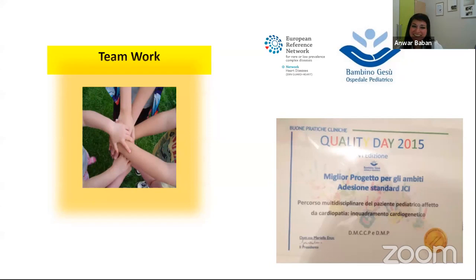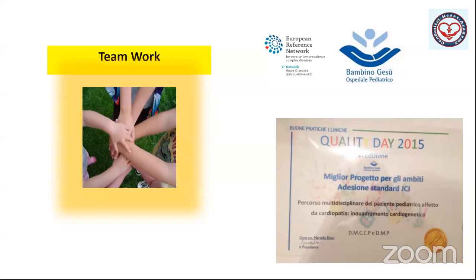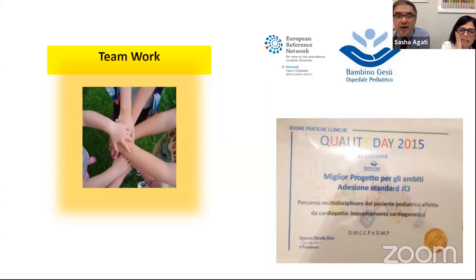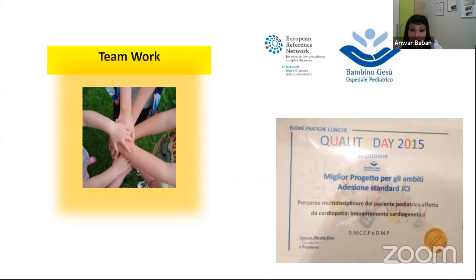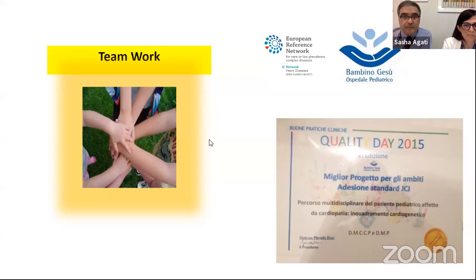Third poll question: In heterotaxy, is right atrial isomerism always associated with asplenia? Is it right to call every neonate with right atrial isomerism asplenic without checking the spleen? No — we know there is very high variability; it is a bizarre laterality defect and each patient must be evaluated.